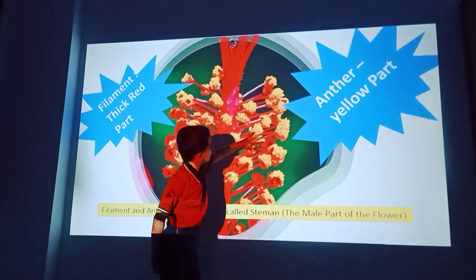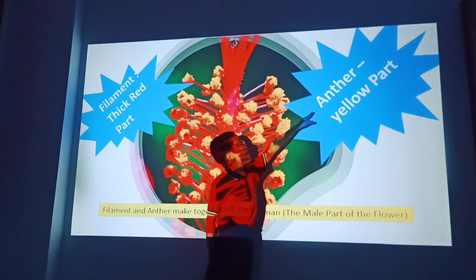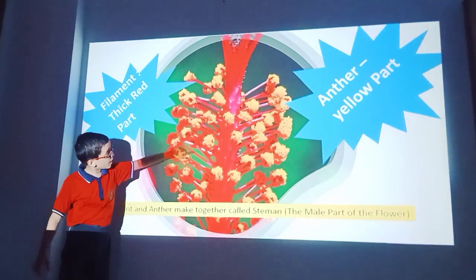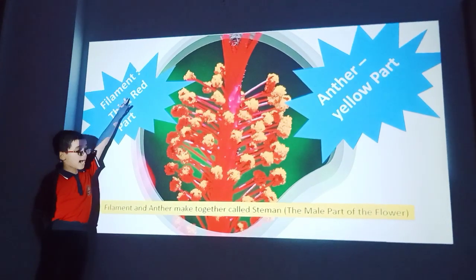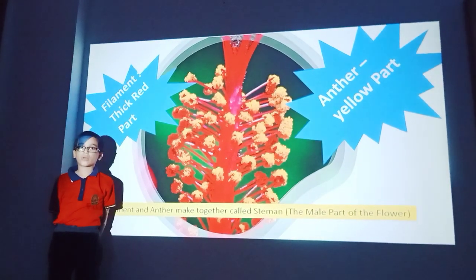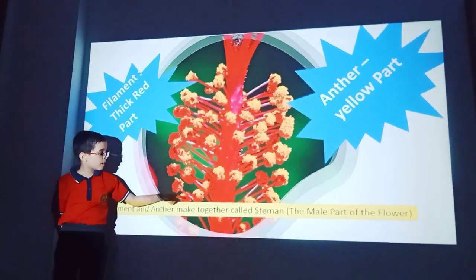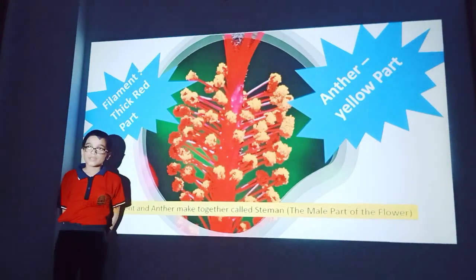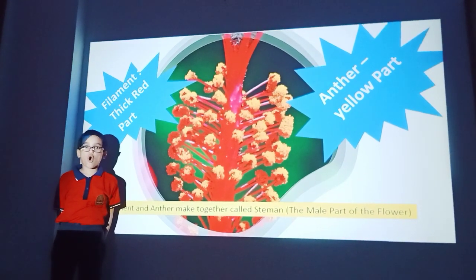Friends, you can see this yellow part is called Anther. And this red hair line part is called filament. Anther and filament together make stamen. Stamen is the male part of the flower.